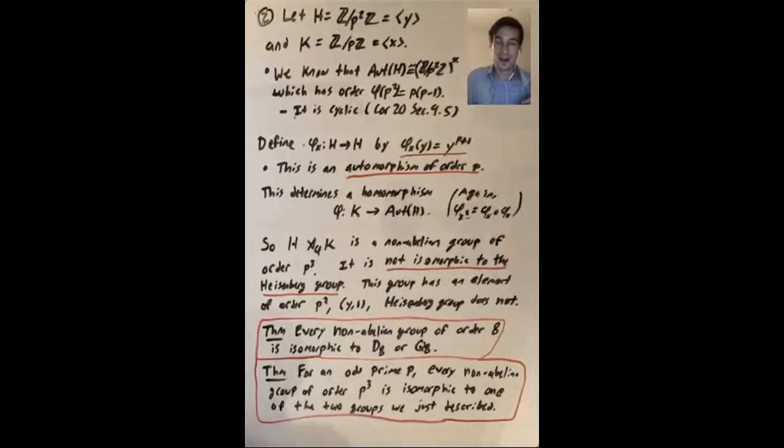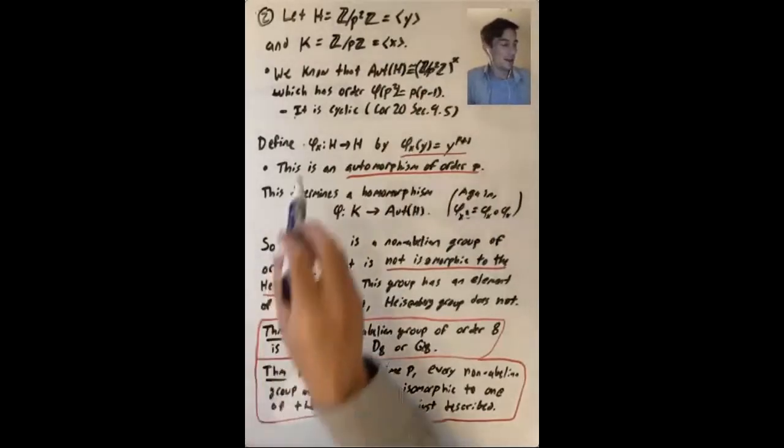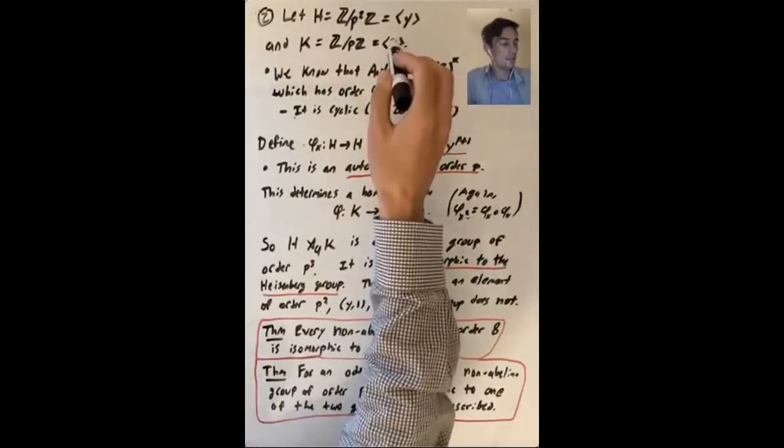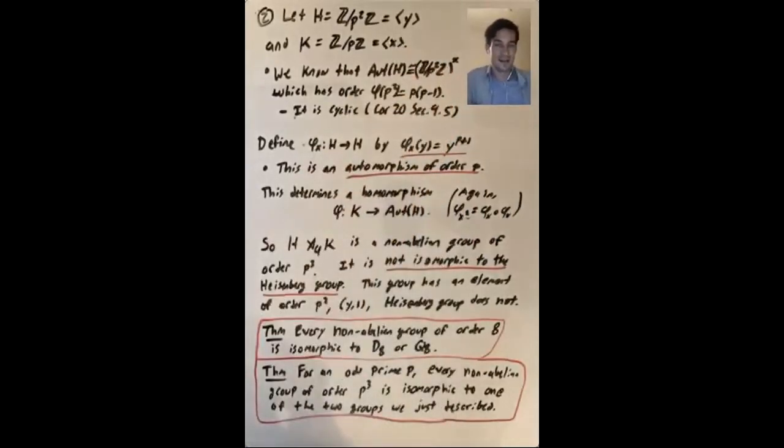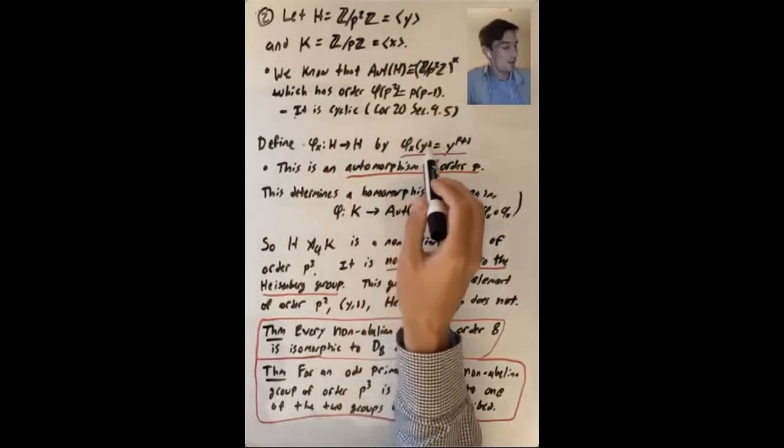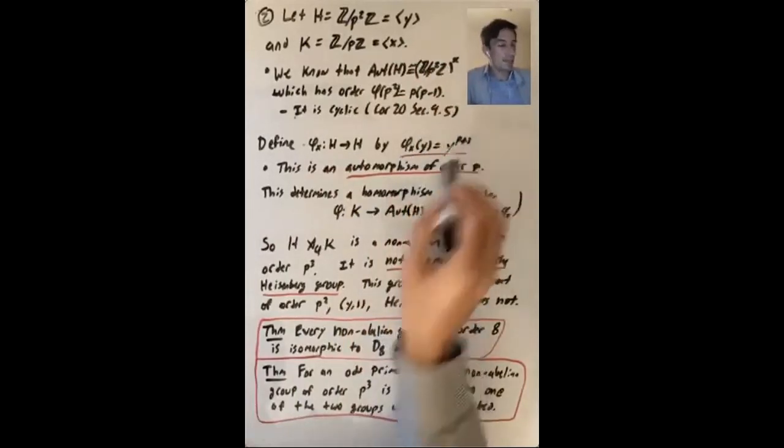So what do we want? We want a non-trivial homomorphism from K to aut H. And what we're going to do is we're going to say, what is the automorphism corresponding to x? So this is going to be defined by saying that phi x of y is y to the p plus one.